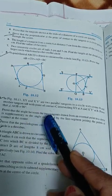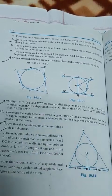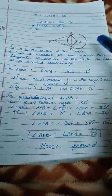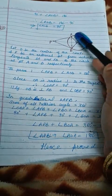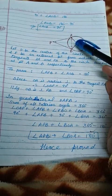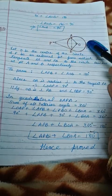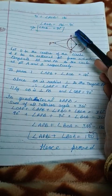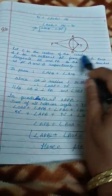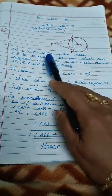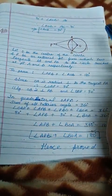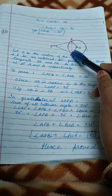ठीक है, इस question से हम क्या समझते हैं, पहले तो हम diagram से clear करवाएंगे। Diagram में क्या बता रहा है — यह है आपके पास center of the circle O, जो है center है। यहां से A और B two points हैं on the circle। यहां से यह आपने tangent draw कर लिए PA and PB — clear।